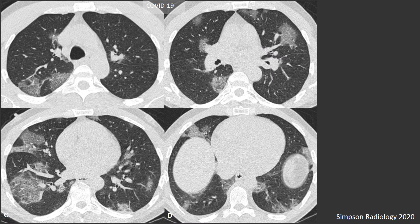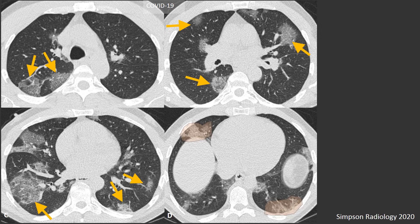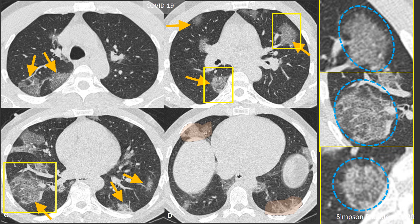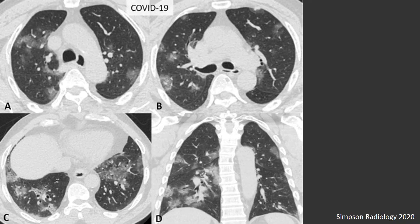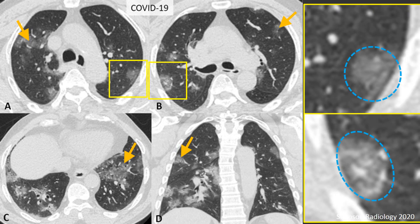Here's a CT of somebody with COVID-19 demonstrating typical features. We see multiple bilateral ground glass opacities, some of which are peripheral in location and when studied more closely demonstrate a rounded morphology as well as visible intralobular lines indicating crazy paving. Another person who tested positive shows multiple bilateral ground glass opacities, some of which appear rounded in morphology.